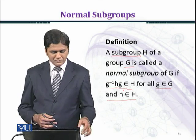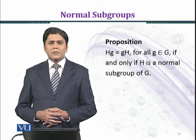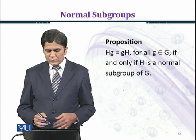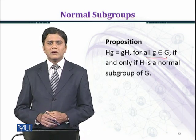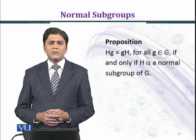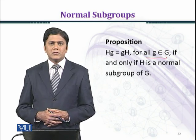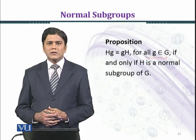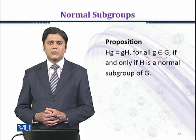You can replace HG equal to GH, where H is capital H. Let's state a proposition: HG equal to GH for all g belonging to G if and only if H is a normal subgroup of G. We will verify this condition — if the left coset equals the right coset, then H is a normal subgroup of G.